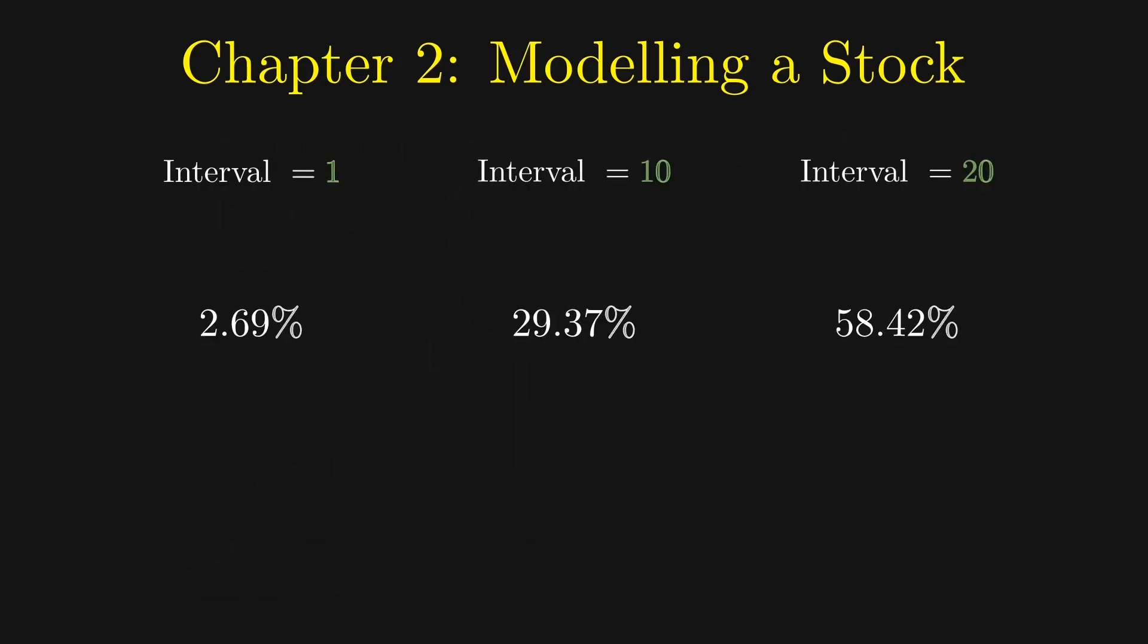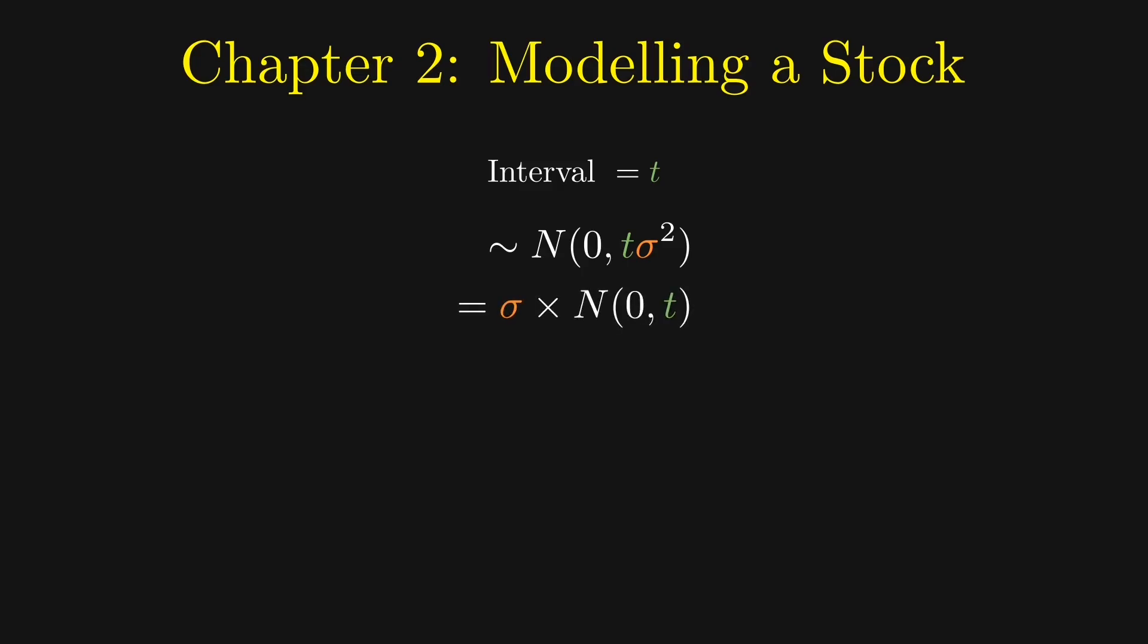The ratio between the variances matches quite well with the ratio between the intervals used. If the interval used is t, then the percentage changes can be modeled as a normal distribution with mean zero and variance t times sigma squared, or equivalently sigma times a random variable with a normal distribution with mean zero and variance t.